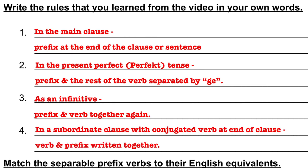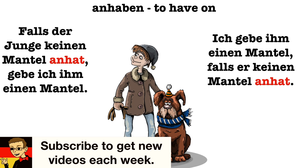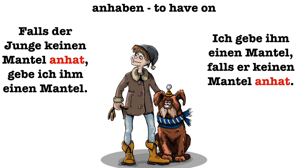The last rule is: if you are using a subordinate clause with a conjugated verb at the end of the clause, the verb and the prefix are written together. For example, with the subordinating conjunction falls and the verb anhaben — you conjugate haben to hat, but an stays attached to the end of it. So it's anhat. Falls der Junge keinen Mantel anhat, gebe ich ihm einen Mantel — in case the boy doesn't have a coat on, I give him a coat. Same sentence with the subordinate clause second: Ich gebe ihm einen Mantel, falls er keinen Mantel anhat.